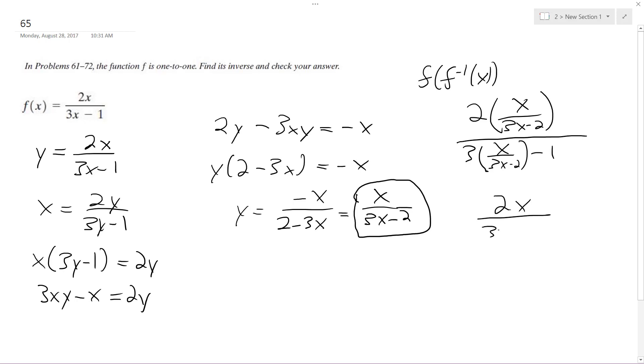2x over 3x minus 2, over 3x minus 3x plus 2 over 3x minus 2. The terms cancel out and we get 2x over 2, which just equals x.